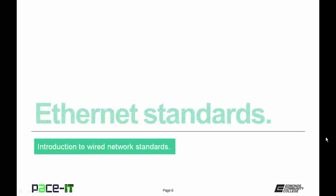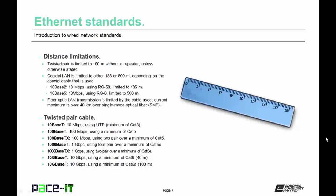Let's move on to Ethernet standards. First up are distance limitations. Twisted pair copper wire is limited to 100 meters without a repeater unless otherwise stated. Coaxial LAN cabling is limited to either 185 or 500 meters depending upon the coaxial cable used. For example, a 10Base2 coaxial network uses RG-58 and is limited to 185 meters in length. On the other hand, a 10Base5 coaxial network using RG-8 is limited to 500 meters.